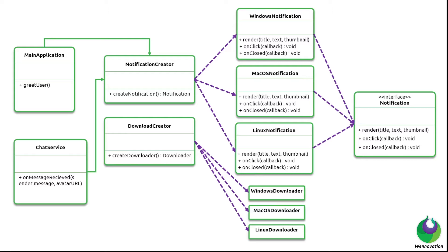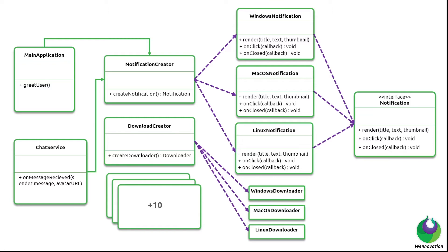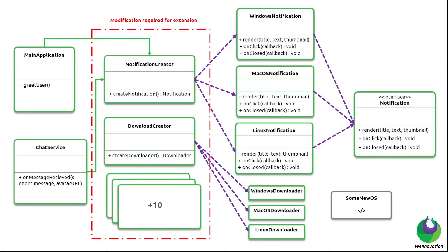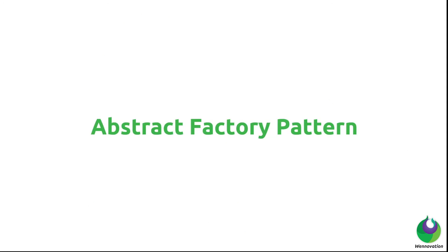Now suppose in the future we have many other features with a similar nature — checking the configured operating system to support multiple look and feel standards. If someday we need to add support for another operating system, we'd have to modify the multiple if statements written inside all these factory methods. You can imagine the amount of modification required, and we'd essentially be violating the Open/Closed Principle we learned about in our previous video.